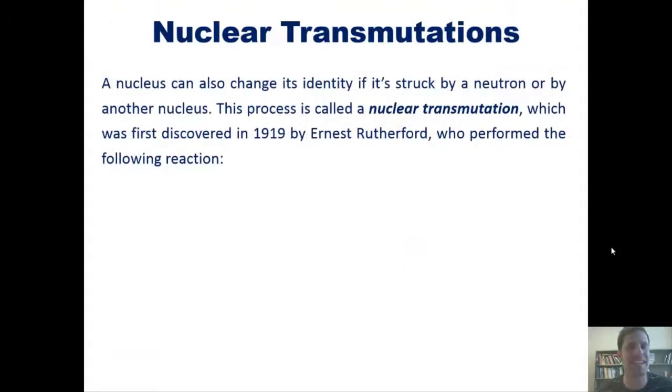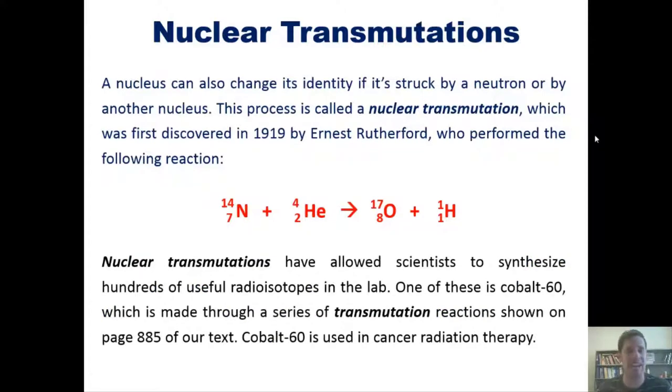Okay, then. Now a nucleus can also change its identity if it's struck by a neutron or by another nucleus. This process is called nuclear transmutation, which was first discovered in 1919 by Ernest Rutherford, who performed this reaction where he bombarded nitrogen-14 atoms with helium-4 or alpha particles.